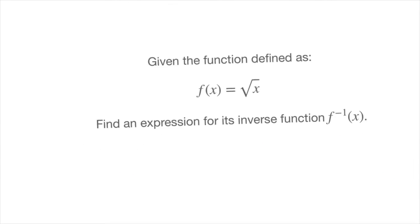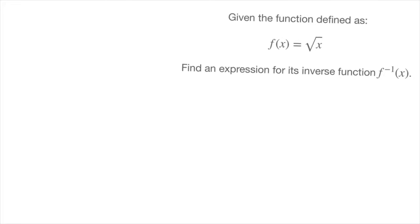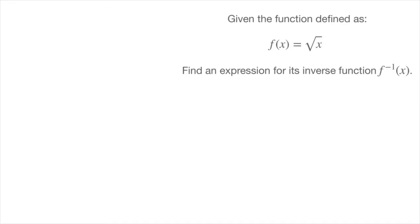I'll start by moving this question to the side to make a little bit of space, and let me copy the function at the top of the page. So that was f of x equals the square root of x. To find the inverse function, we follow the same method as we would for most functions, and that is a two-step method.